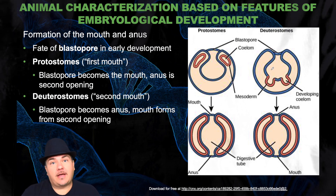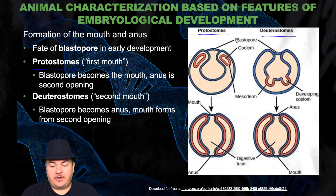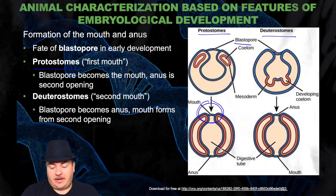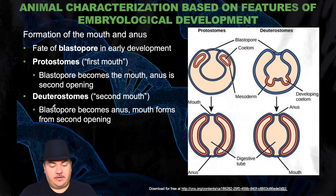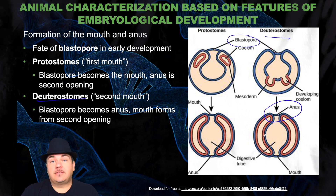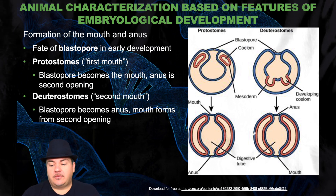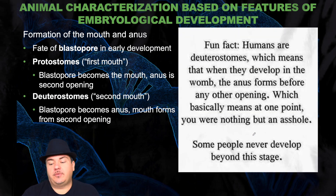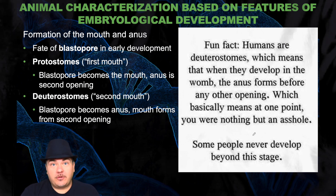There are two different categories: protostomes and deuterostomes. In protostomes, that first opening — the blastopore — becomes the mouth. The second opening that forms after that becomes the anus. Whereas in deuterostomes, that first opening, the blastopore, becomes the anus, and the second opening becomes the mouth. Humans are an example of deuterostomes, which means that when they develop in the womb, the anus forms before any other opening.